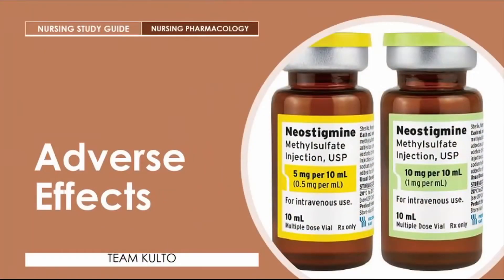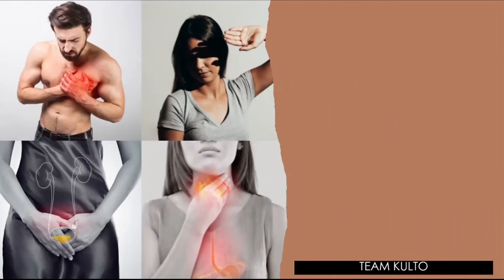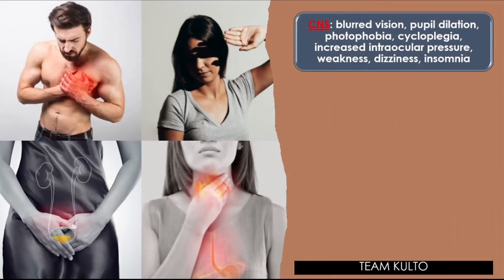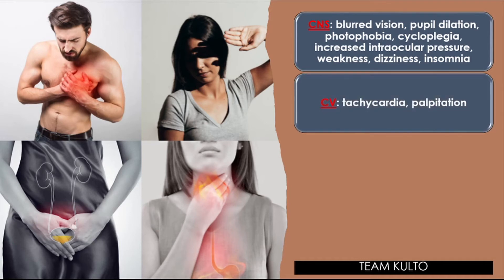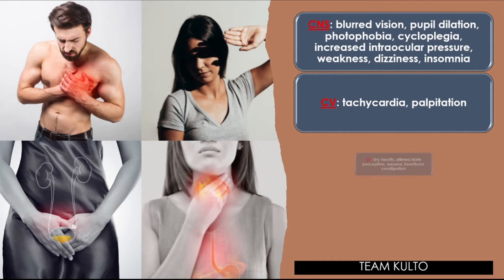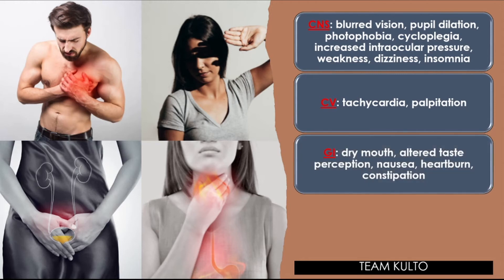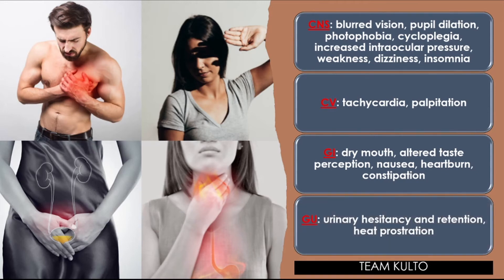Adverse effects of indirect acting cholinergic agents: CNS — blurred vision, pupil dilation, photophobia, cycloplegia, increased intraocular pressure, weakness, dizziness, and insomnia. Cardiovascular — tachycardia, palpitations. GI — dry mouth, altered taste perception, nausea, heartburn, and constipation. Genitourinary — urinary hesitancy and retention. Others — heat prostration.